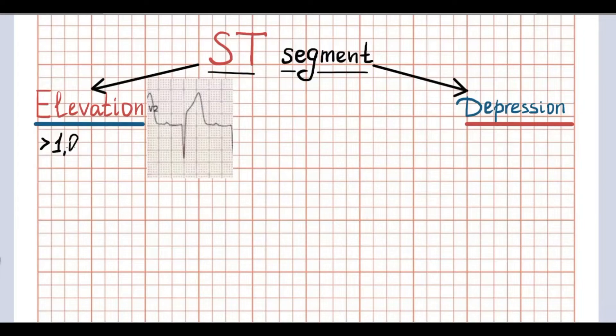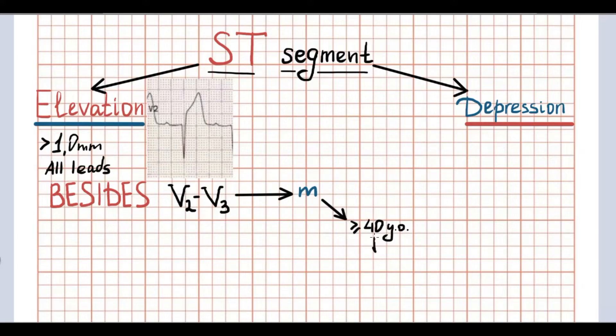So for all leads criteria of elevation is 1 mm above the baseline. But in leads V2 and V3 criteria depends of gender and age. For male older than 40 years is 2 mm. For male younger than 40, it is 2.5 mm. For female is 1.5 mm independent from age.